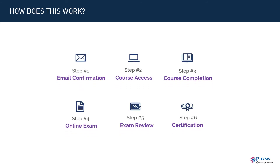Once you enroll in this training program, we will first send you a confirmation email to your registered email address, followed by course access details within the next 48 hours. You then go through all the course modules at your pace and time, and you can contact us anytime for any query. After finishing all modules, we grant you access to the online exam. The exam is open book and self-paced — it isn't timed. After submitting the exam, our faculty will review it and issue you a certification of completion along with a performance card within 14 working days.